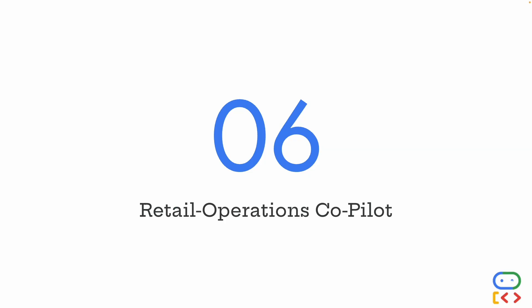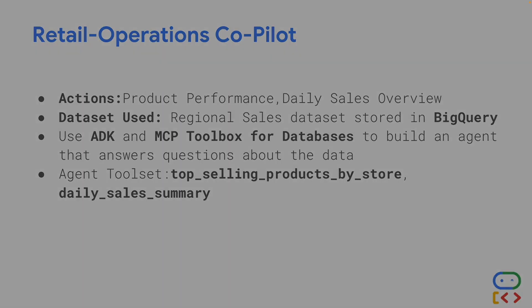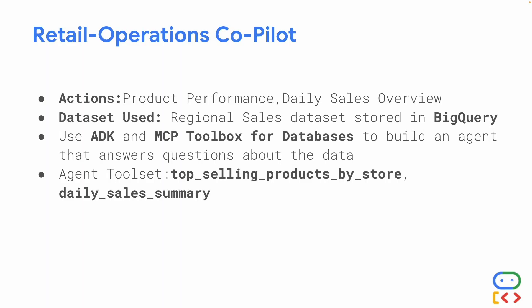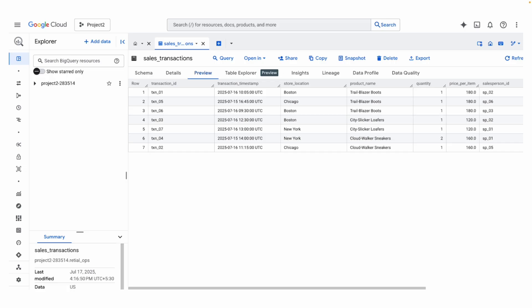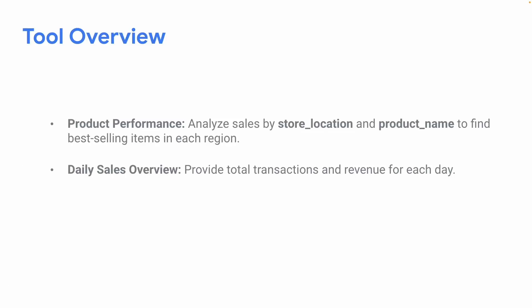The first agent we're going to build is a retail operations co-pilot. The actions we want to perform are product performance and daily sales overview. We have a regional sales dataset stored in BigQuery, and our goal is to use ADK and the MCP Toolbox for Databases to build an agent that answers questions about the data. The agent toolset will have two tools: top selling products by store, and a daily sales summary provider. The dataset in BigQuery includes sales transaction ID, timestamp, store location, product name, quantity, price per item, and salesperson.